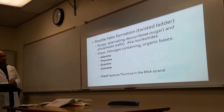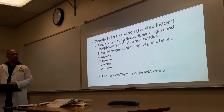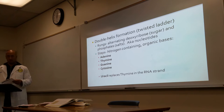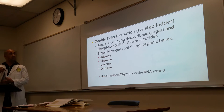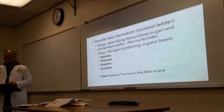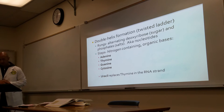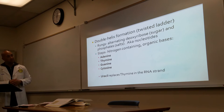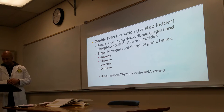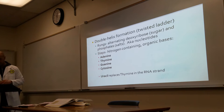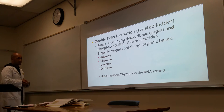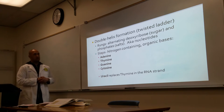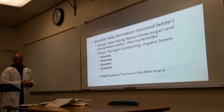DNA has a double helix formation — a twisted ladder. The rungs of the ladder consist of alternating deoxyribose sugars and alternating phosphates. Then you have the steps of the ladder.